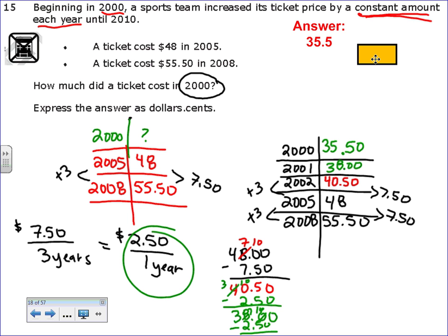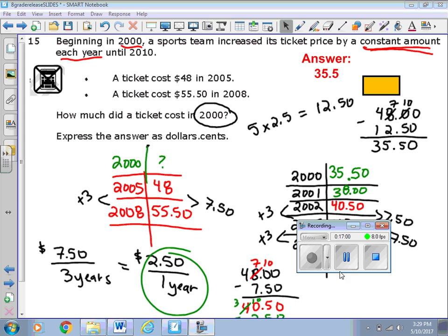Are there faster ways to do that? Of course. Once you've realized the slope, you could have realized that you need to go back from 2005, you need to go back 5 years. 5 times 250, that's going to give you 1250 or 12.50. And if you take $48 and you subtract 12.50, that's 35.50. So that's obviously the faster way to do it. There's different ways as long as you get 35.50. That's the end of this one.